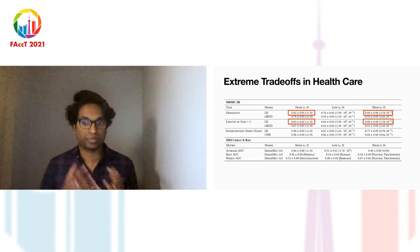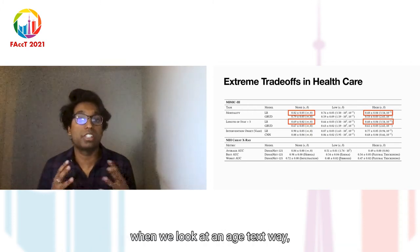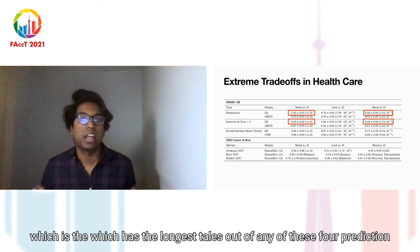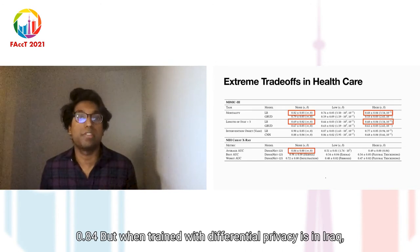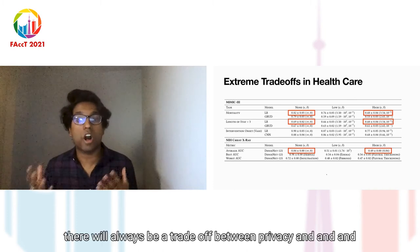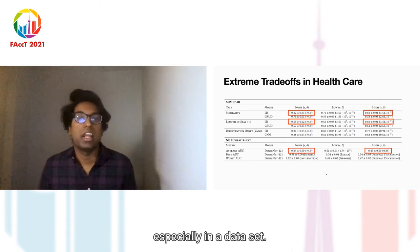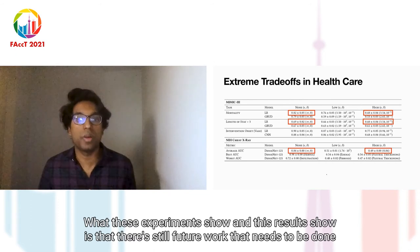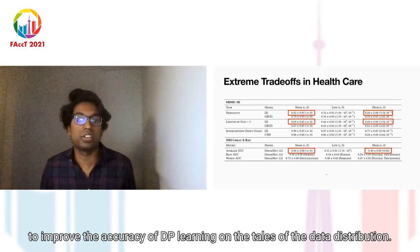Similarly, for intervention onset, the drop is much smaller than for mortality. For NIH chest X-ray, which has the longest tails of any of these four prediction tasks, the model trained without differential privacy achieves an AUROC of 0.84, but when trained with differential privacy it achieves an AUROC of 0.49 — approximately a random classifier. While there will always be a trade-off between privacy and utility for the tails, these results show that future work is needed to improve the accuracy of DP learning on the tails of the data distribution.